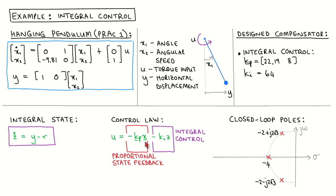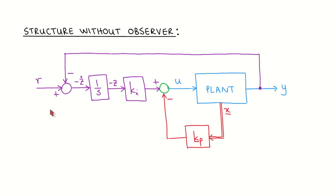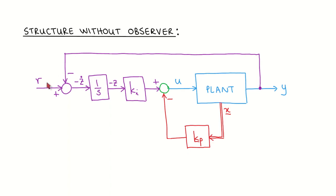Looking at a diagram of the plant and compensator with integral control: the difference between the plant output and the reference input forms the derivative of the integral state, which is put through an integrator to form the integral state z. This is multiplied with the integral gain Ki, forming one component of the plant input. The plant states are also multiplied with the proportional state gain vector, forming the other component. For the system to reach steady state, the derivative of the integral state must be zero, meaning the difference between the plant output and reference input must be zero.